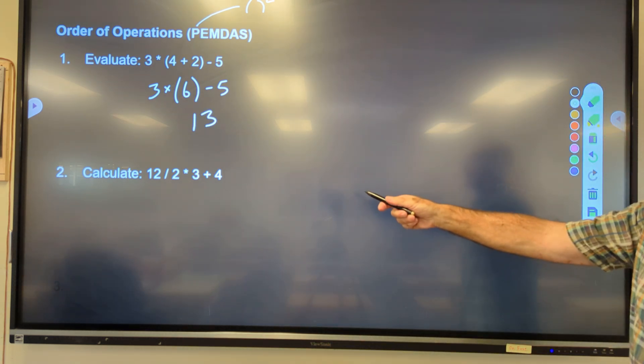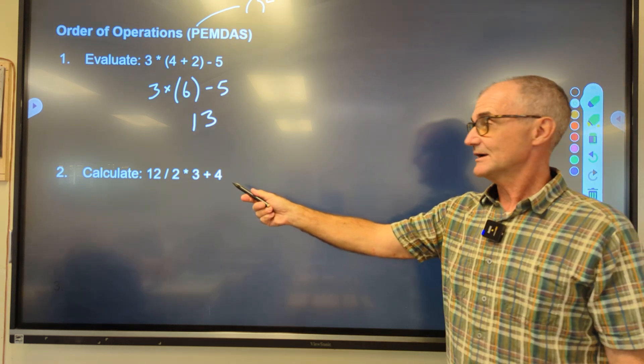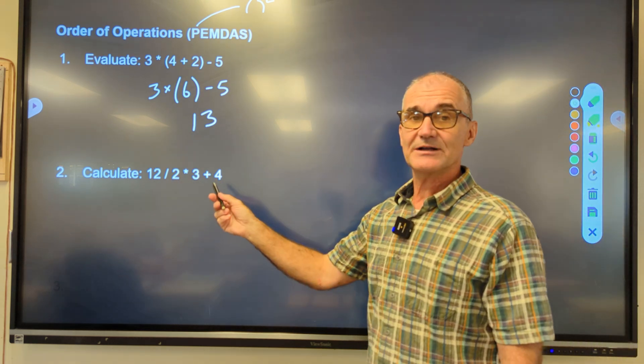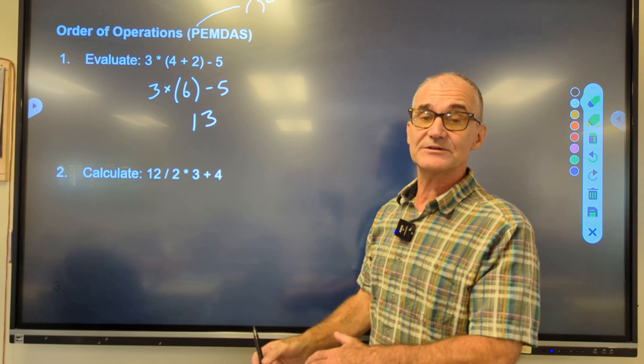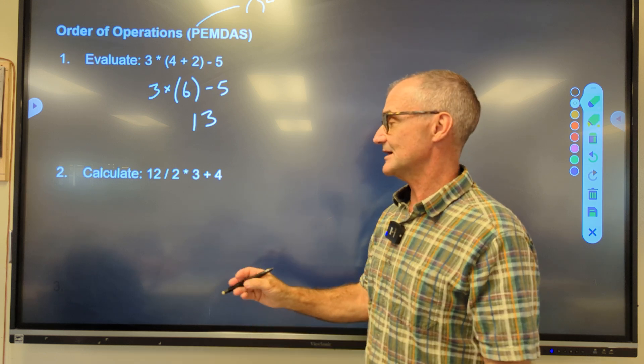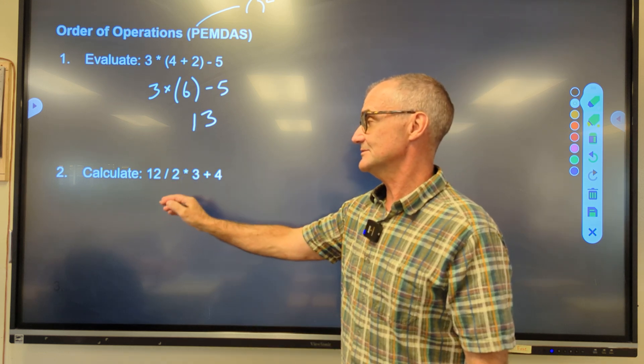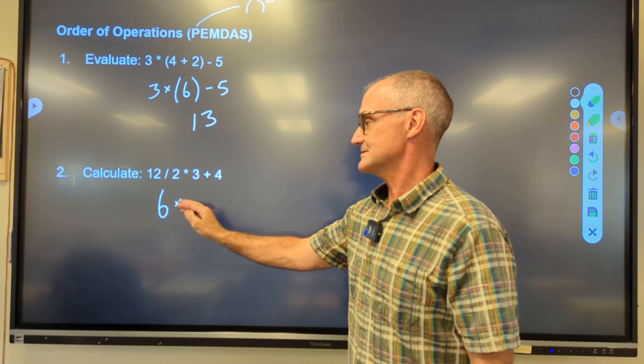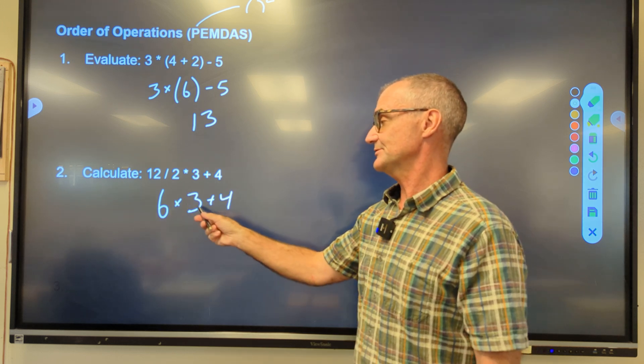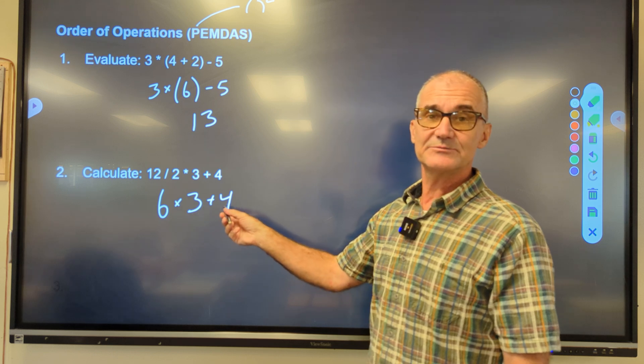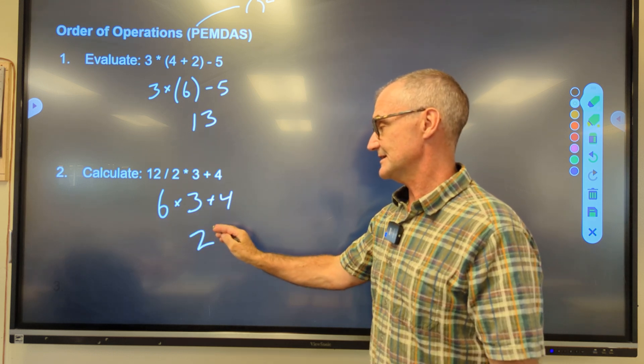One more order of operations problem. No parentheses, no exponents, so I'm just going to go left to right. Multiplication or division first, then addition and subtraction. 12 divided by 2 is 6. 6 times 3 plus 4. 6 times 3 is 18. 18 plus 4 is 22. That's your answer there.